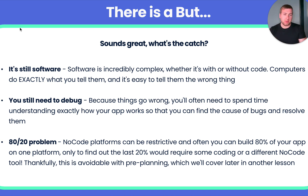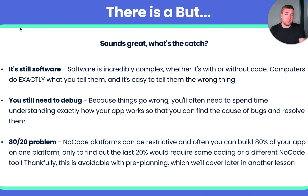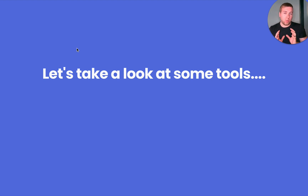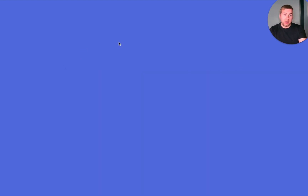The 80-20 problem is improving every single day. New NoCode tools come out constantly and lots of money is going into developing these platforms. The Uber map example will likely be solved within a couple of months. Whatever constraint you run into, either some tool will be able to do it, there will be a workaround, or it will be coming soon. This is always avoidable with a bit of pre-planning and research. Now that we understand how NoCode works, let's dive into the tools themselves in the next video.